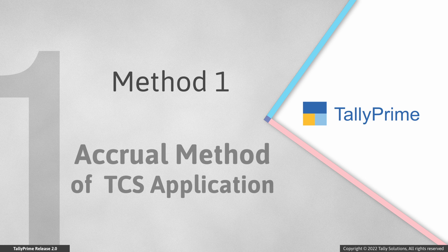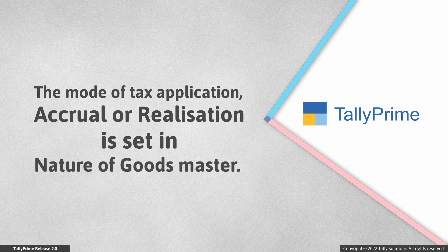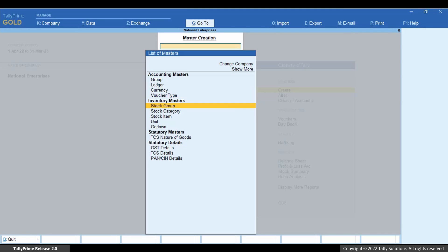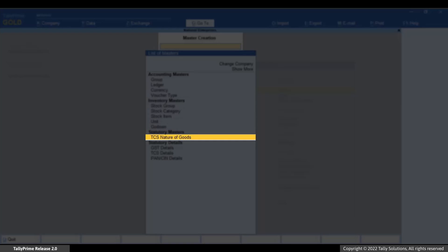Let us look at the accrual method first. Begin by creating the nature of goods master. It is in this master that you can choose to levy tax at the accrual or while realization. In Tally Prime, go to Create and select TCS Nature of Goods.